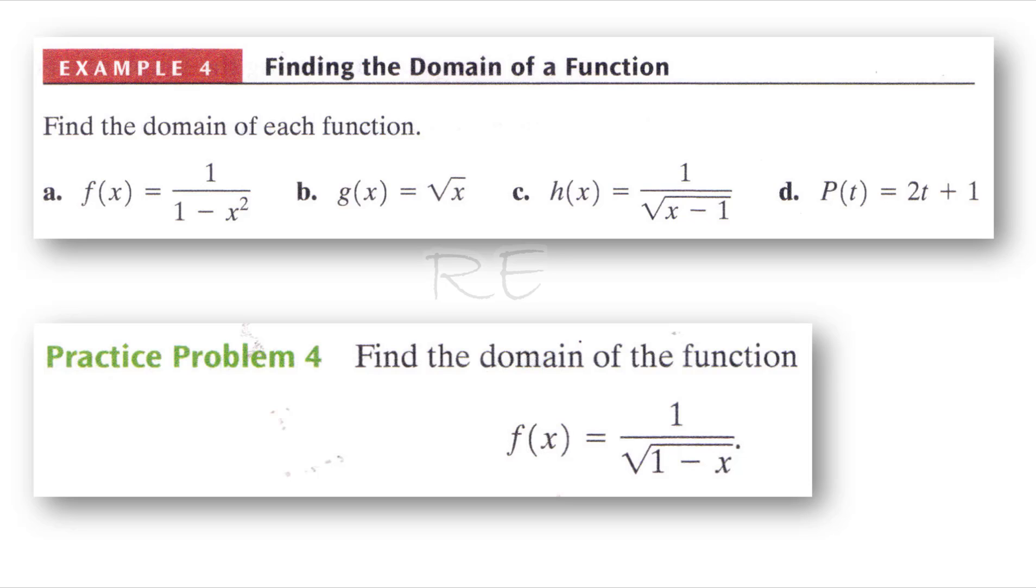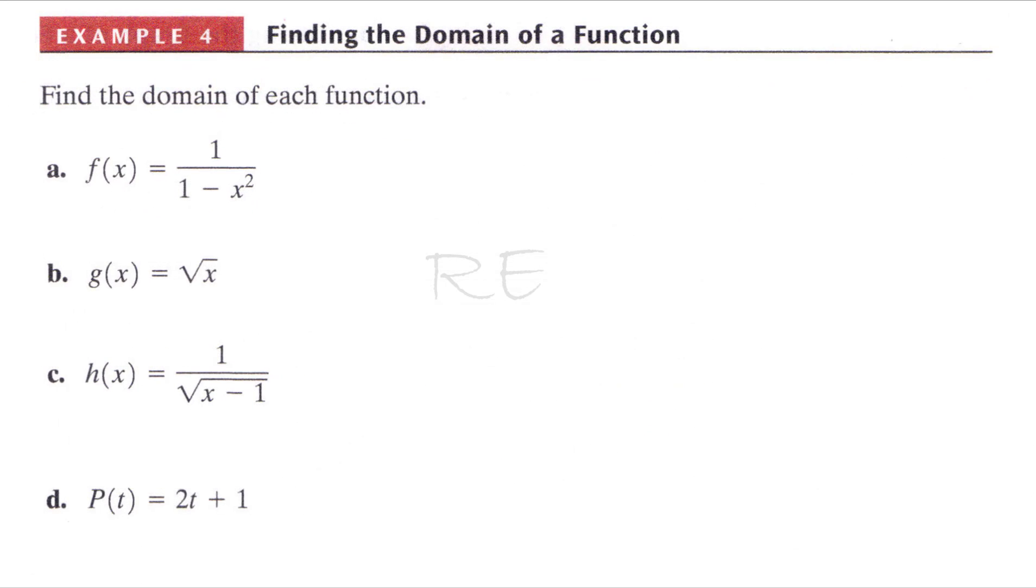The domain is the set of all possible inputs that the function can take. For f(x) = 1/(1-x²), you cannot divide by zero, so we set the denominator equal to zero to eliminate values where the function is undefined. 1 minus x squared equals 0. Difference of two perfect squares: (1+x)(1-x). Therefore, x equals negative 1 or x equals 1. So the domain for f(x) is the real numbers minus 1 and negative 1.